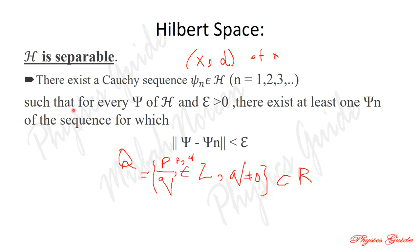There exists a Cauchy sequence psi_n belonging to Hilbert space H, for n = 1, 2, 3, …, such that for every psi in H and every epsilon greater than 0, there exists at least one psi_n of the sequence for which |psi − psi_n| < epsilon. This proves that H is separable.